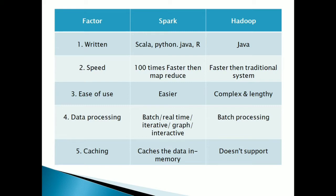Next is data processing. Hadoop supports batch processing — the data we want to process must be stored in batches and provided as input to Hadoop using HDFS. Whereas in Spark, both batch processing and real-time processing are possible. We can process real-time live streaming data, interactive data, iterative data, and Spark also supports a graph API. So data processing is much more versatile in Spark compared to Hadoop.